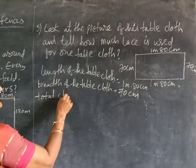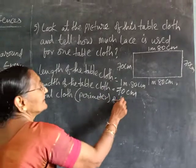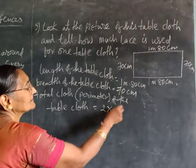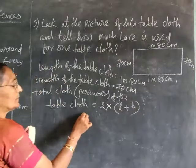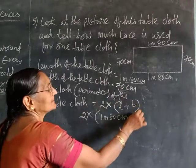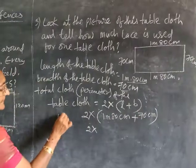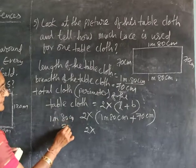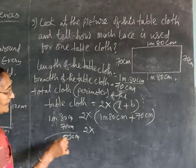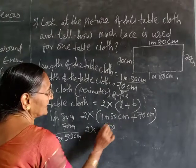Perimeter of the tablecloth is equal to 2 into L plus B. So 2 into L: length is 1 meter 80 centimeters, and breadth is 70 centimeters. Let us first add these two: 1 meter 80 centimeters plus 70 centimeters. 8 plus 7 is 15, so write 5 and carry 1. Then it is 2 meters 50 centimeters.